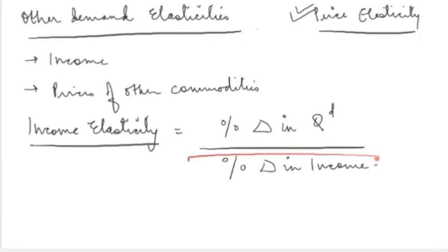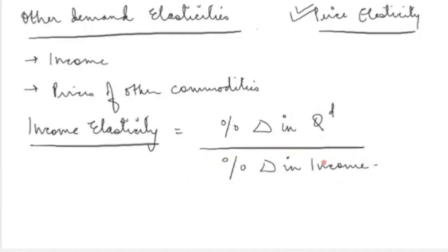We are basically saying that there will be some change in income, and how this change in income would affect the change in quantity demanded is what we are trying to understand through income elasticity. It will tell you that if income changes by 1%, what percentage change would it create in your quantity demanded.